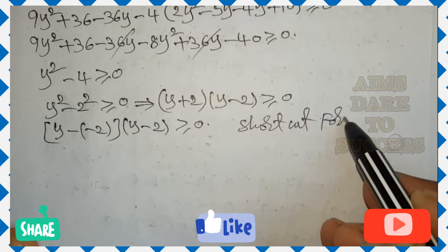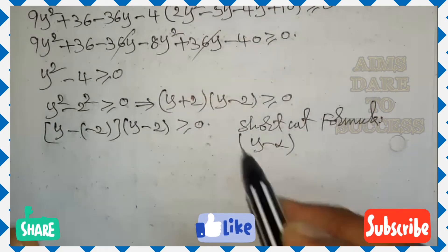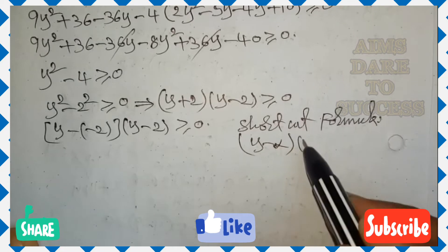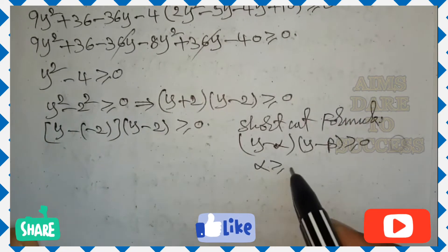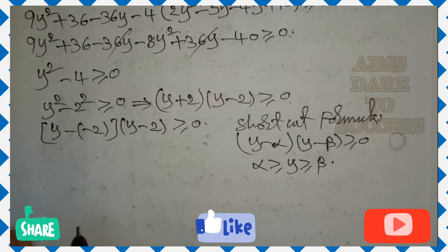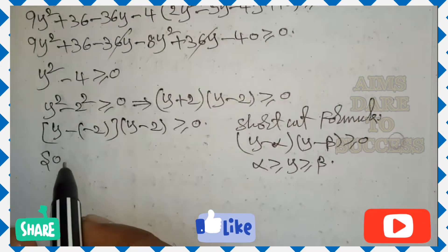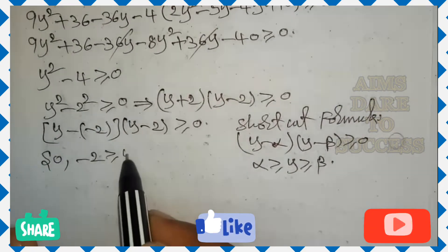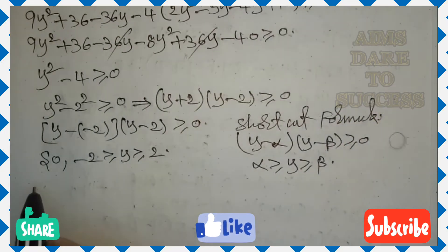formula my dear students, it is very very important to get answer easily. y minus alpha into y minus beta is greater than or equal to 0, then alpha is greater than or equal to y is greater than or equal to beta. Alpha is a small value, beta is big value. Here small value minus 2, big value 2. So minus 2 is greater than or equal to y is greater than or equal to 2 is the answer.